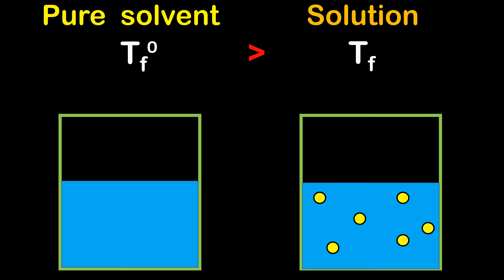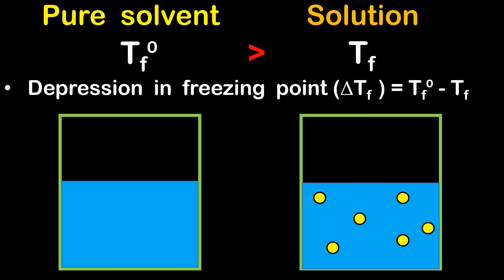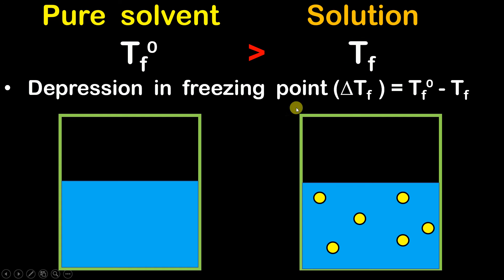The value of depression in freezing point is Tf0 minus Tf. Since Tf0 is the greater value, we subtract Tf from Tf0. Depression in freezing point is represented by delta Tf.